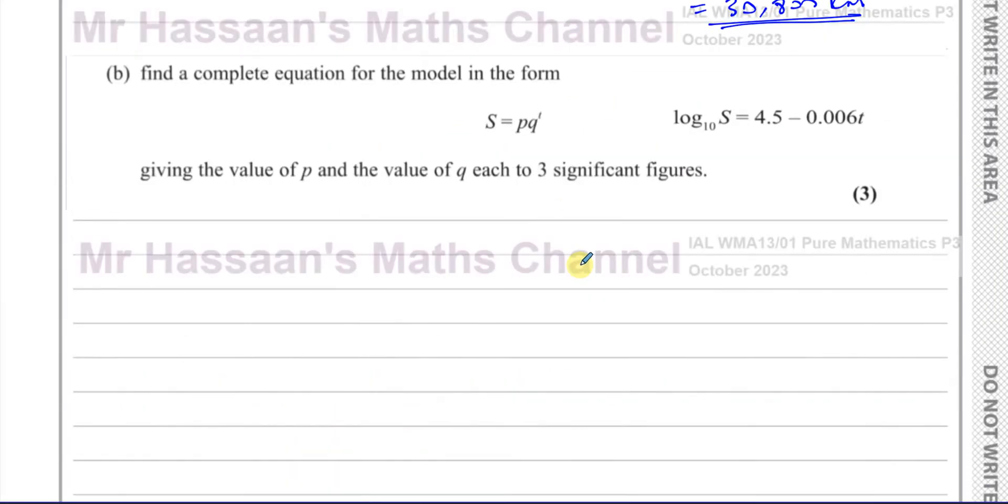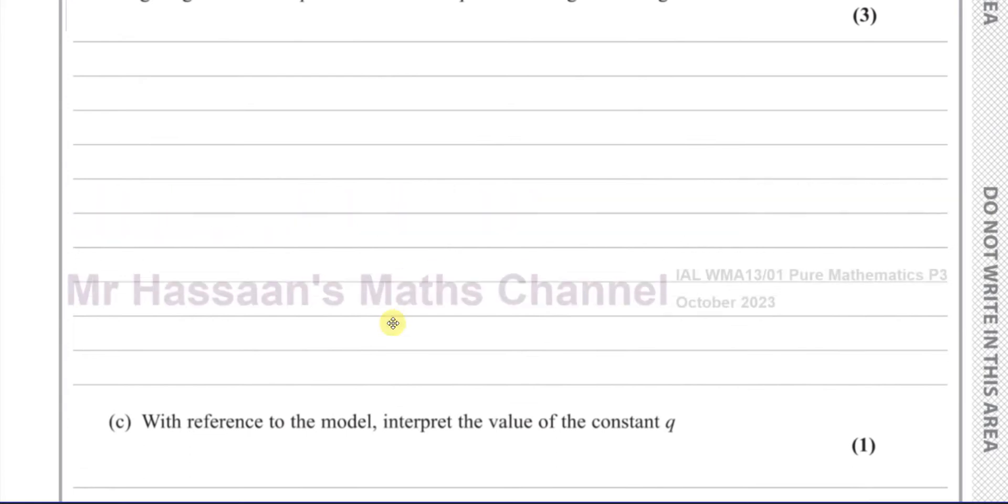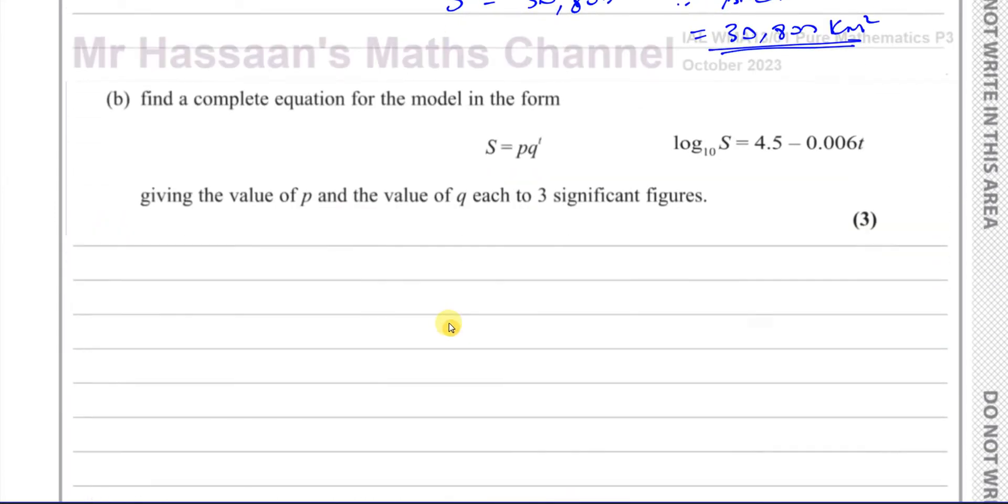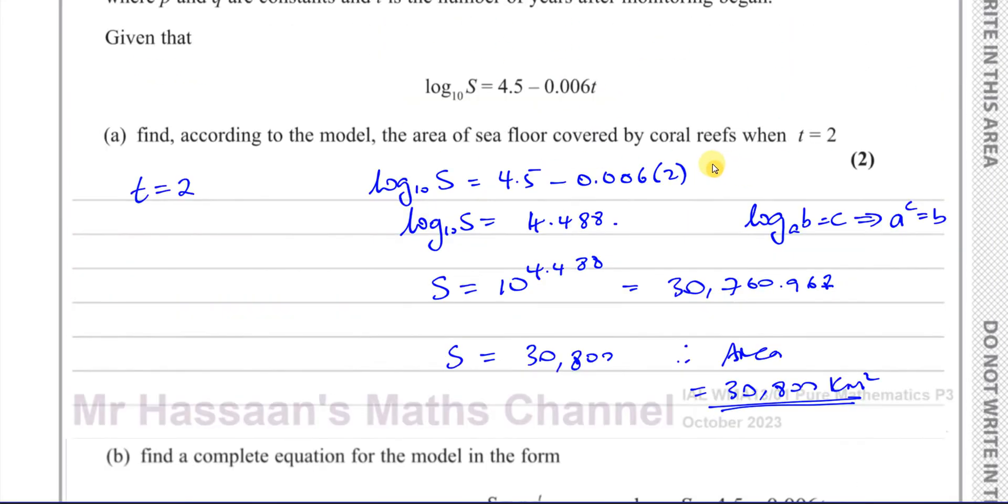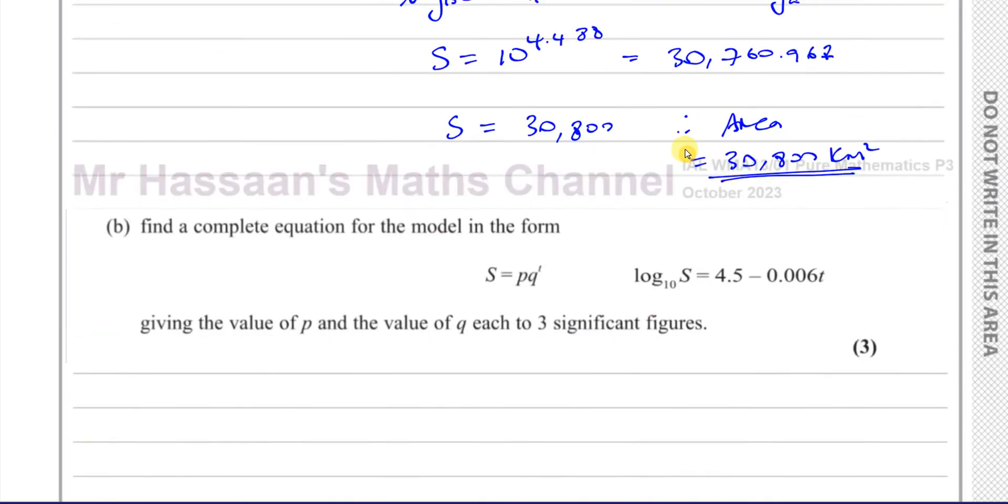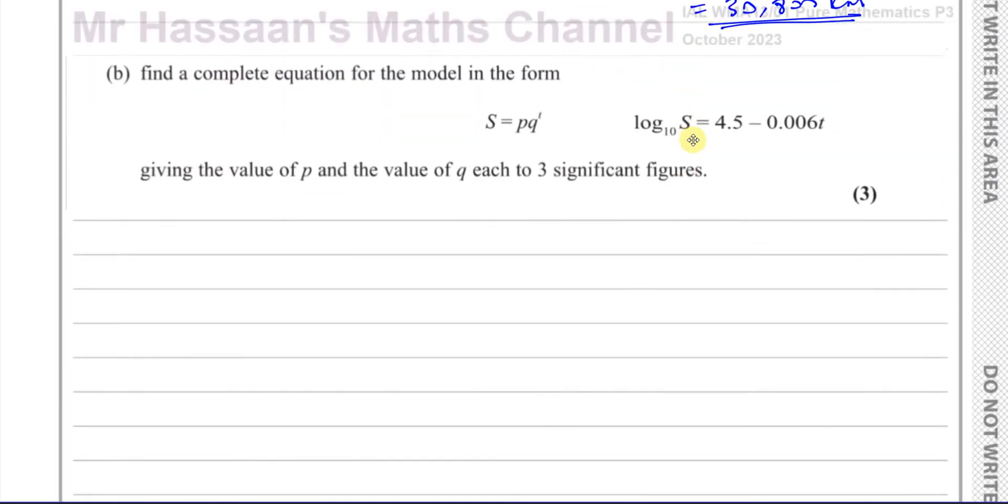Now for part B, it says find a complete equation for the model in the form S equals pq to the power of t, given the value of p and the value of q each to three significant figures. This is the model that we have in terms of logarithms, and this is the model that we have in terms of index or exponents.